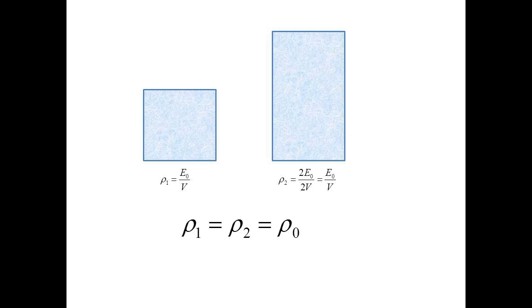Now, if we double the volume, we also double the amount of vacuum, and thus the amount of vacuum energy. The two's cancel out. We have the same energy density as before. Energy density is constant in vacuum. Let's call this constant, the energy density of vacuum, rho zero.